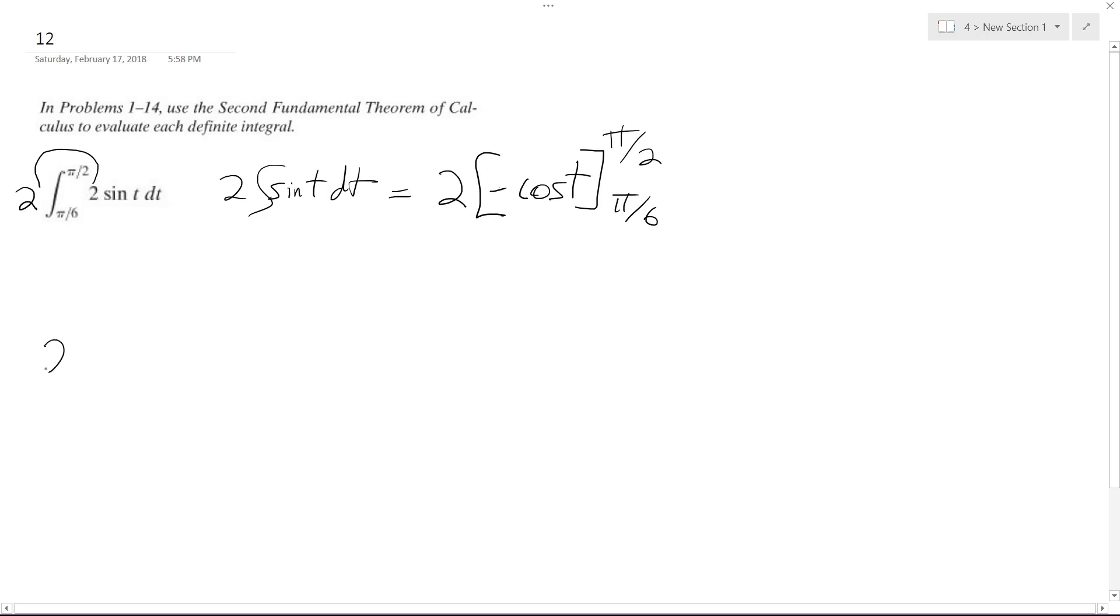So what happens here is we're going to have negative cosine of pi over 2 minus negative cosine of pi over 6.